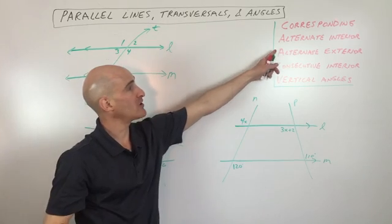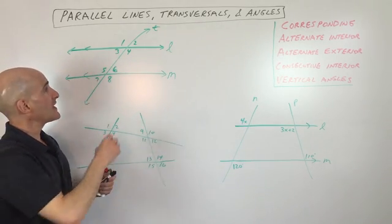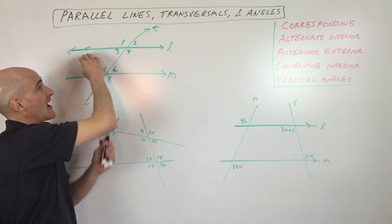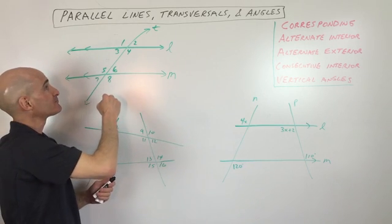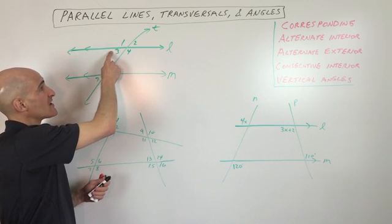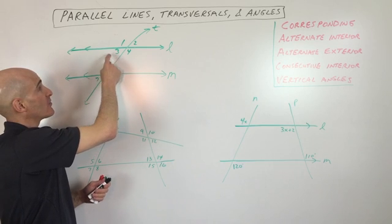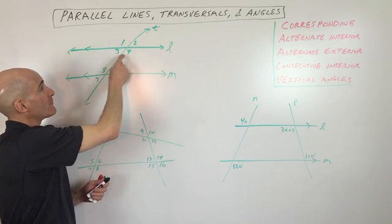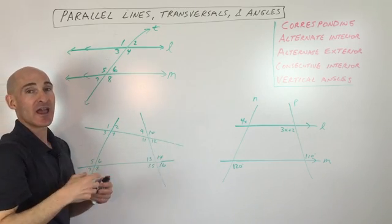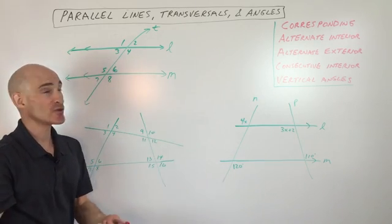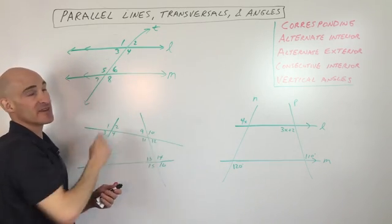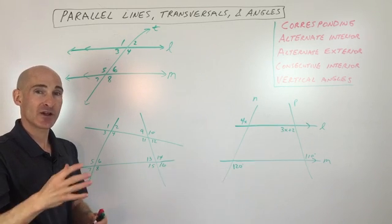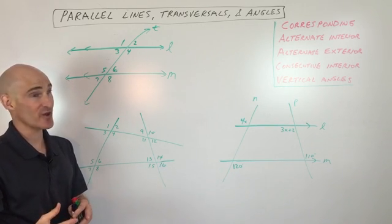Alternate interior angles: interior means they're in between the two parallel lines, and alternate means one's on the left and one's on the right. So three and six are alternate interior angles, and four and five are alternate interior angles — they're congruent, meaning those pairs are equal to each other. Thinking about what the name represents will help you figure out which angles you're working with.